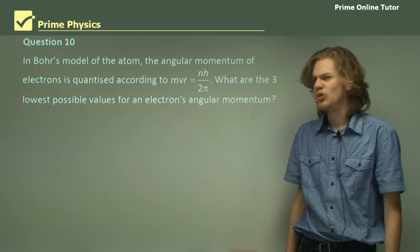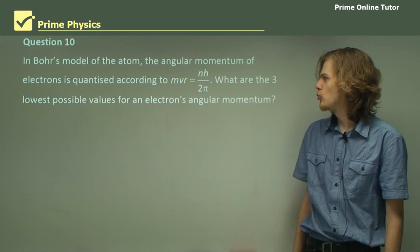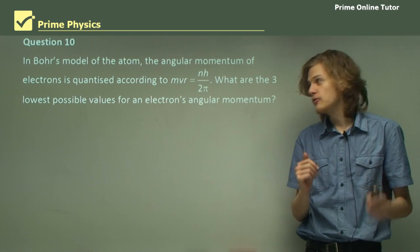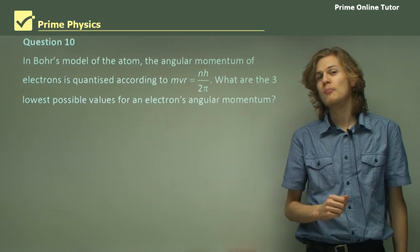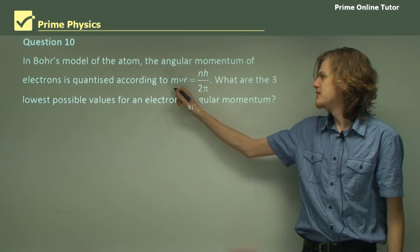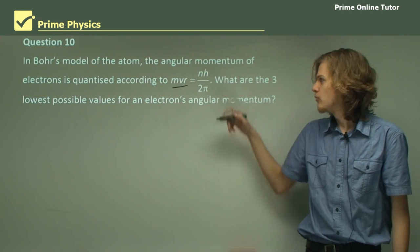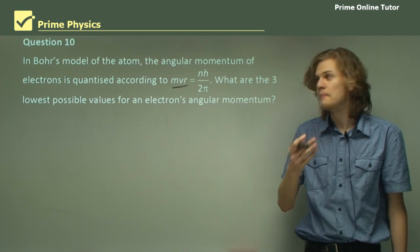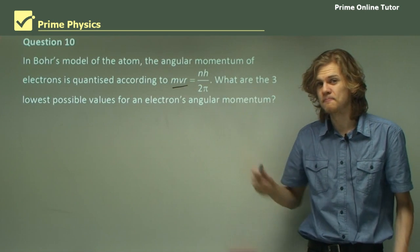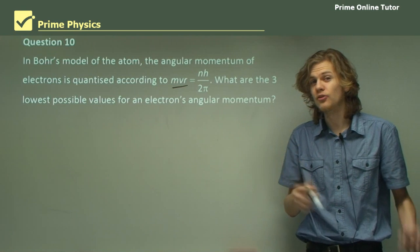Finally, question ten. It's a bit of a long one. In Bohr's model of the atom, the angular momentum of electrons is quantized according to this equation. What are the three lowest possible values for an electron's angular momentum? So remember, the angular momentum of the electron is this thing over here. So if we want to find the lowest three values, we want to have this thing being the lowest it can possibly be. Can't change h, can't change pi, can't change 2. We can change n. So, we'll start off with n equals 1. That's the lowest we can get for this equation.